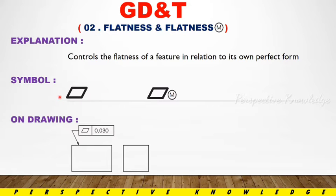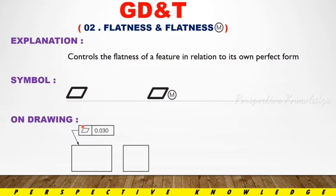The flatness symbol looks like a square or parallelogram. If you have an engineering drawing with a feature control frame, you place the flatness symbol in the box. The feature control frame contains the flatness symbol followed by a specific tolerance value. From the engineering drawing, you will get the flatness value in the specification.